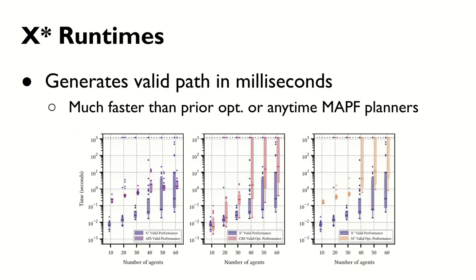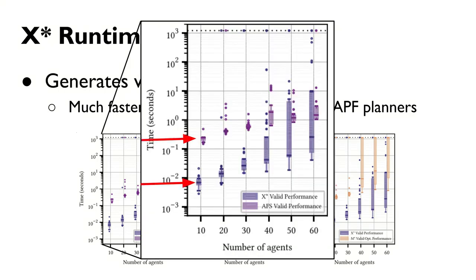In short, X* is able to generate valid paths on the order of milliseconds, much faster than other planners. For example, in this domain of 5% occupied four-grids, X* is able to outperform Anytime Focal Search in median time-to-valid path by almost an order of magnitude. This trend is seen across all grid obstacle densities, though the gap narrows as the percentage of obstacles increases.